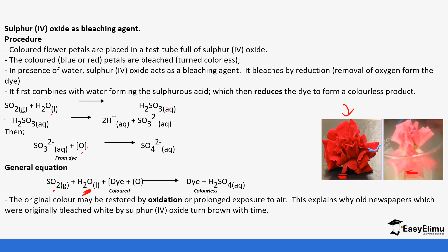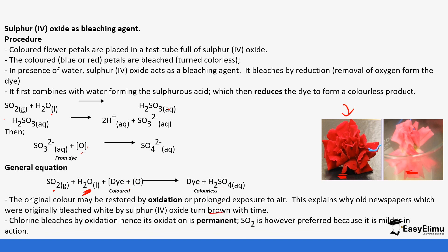That is the reason why old newspapers, which are originally bleached, usually turn brown with time. There is another substance used in bleaching: chlorine. Bleaching by sulfur dioxide is by reduction, but bleaching by chlorine is by oxidation. By reduction you can return the oxygen back, but with chlorine the oxidation is a permanent reaction you cannot reverse — that is why chlorine is much preferred, as we will look at later in chlorine and its compounds.